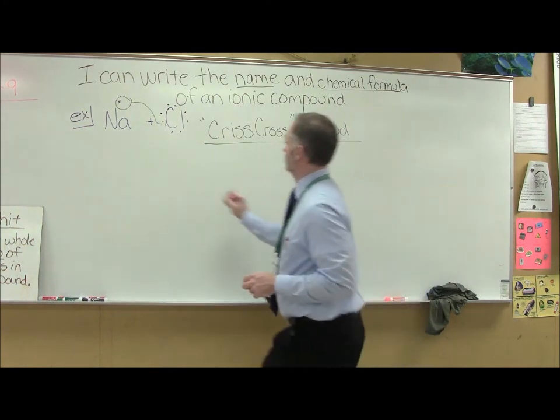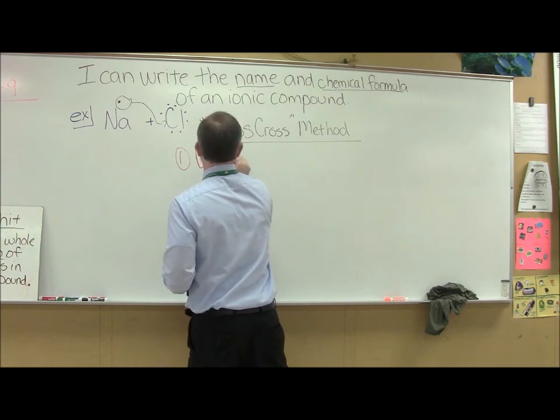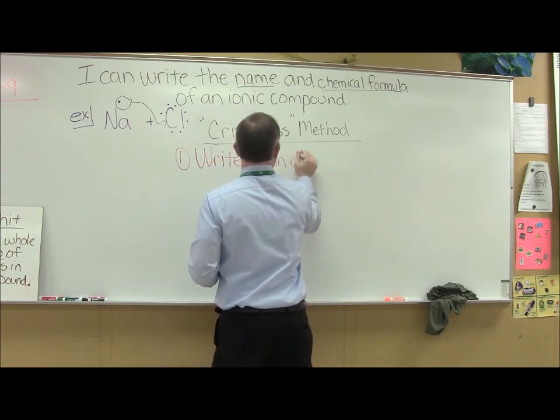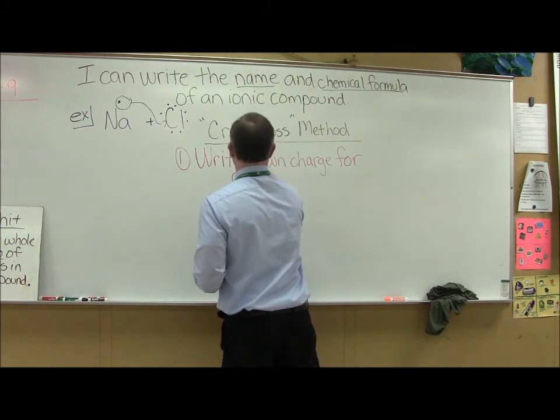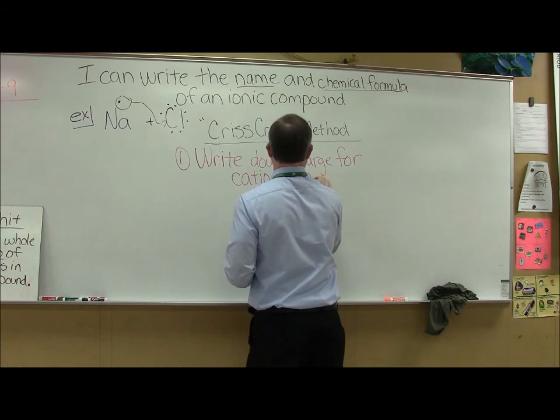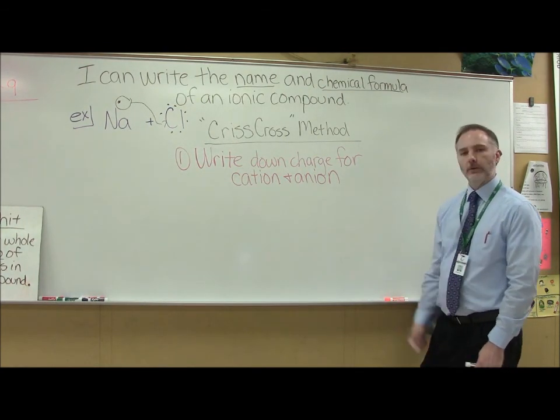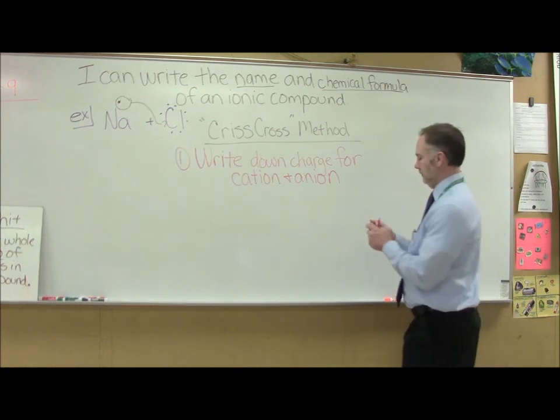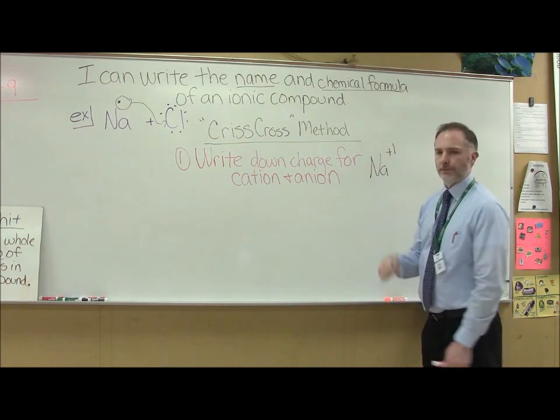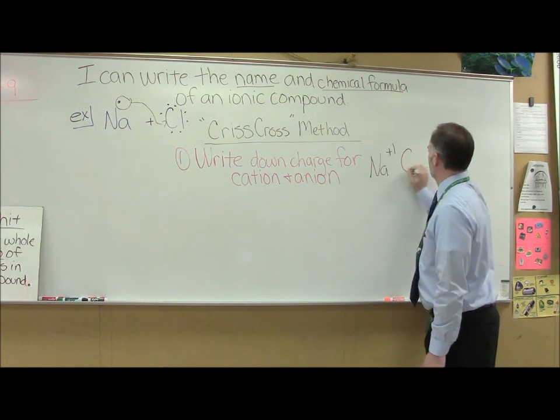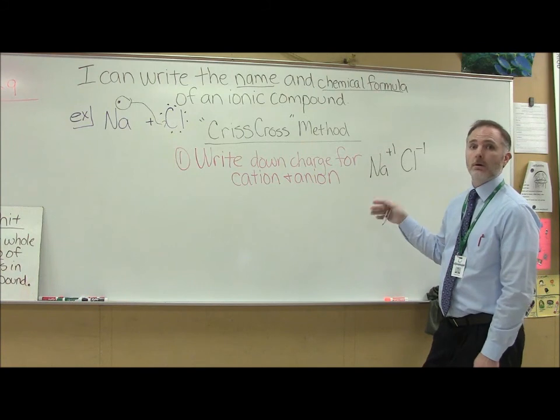First step of the crisscross method. Step one, write down the charge for your cation and your anion. So in this case here, I'll keep this example sodium and our chloride. Na forms a plus one. And I'm just going to write the one for now even though we don't have to because I want to show you something here. Same thing with my chlorine forming a negative one ion. So you have to be able to do this. Once you hear this part, it's really simple.